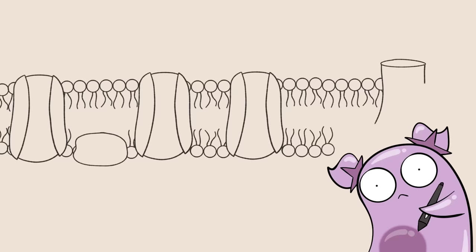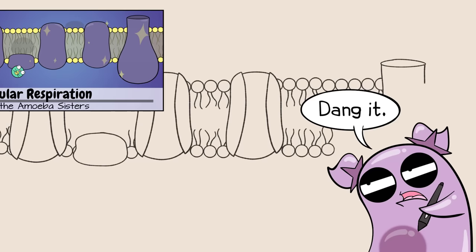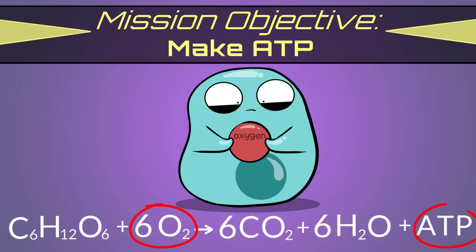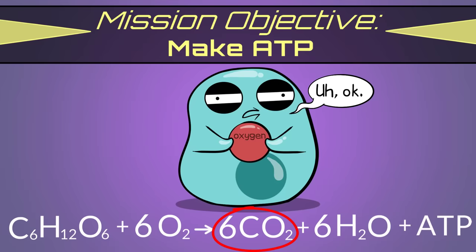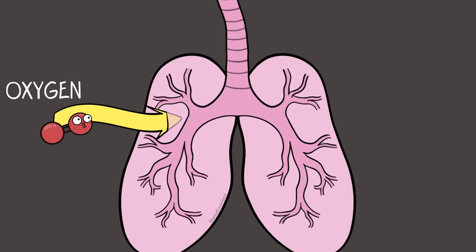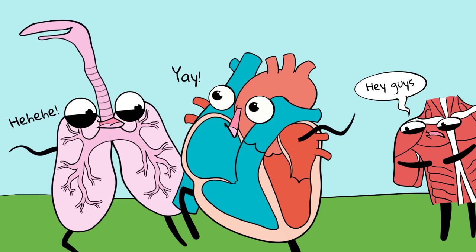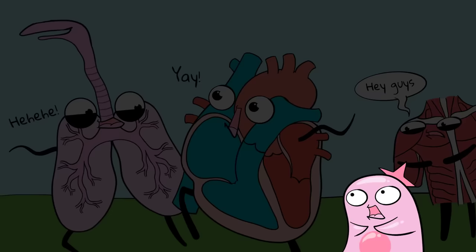Don't confuse the respiratory system with cellular respiration. If you watched our cellular respiration video, you learned about why our cells need oxygen. Your cells need oxygen to make ATP, an energy currency, and the gas byproduct produced is carbon dioxide, which the body must remove. This is part of aerobic cellular respiration done by your cells. But your respiratory system, which takes in oxygen and expels carbon dioxide, working closely with the circulatory system, is how we get oxygen into the human body in the first place — and that oxygen will be needed for cellular respiration.